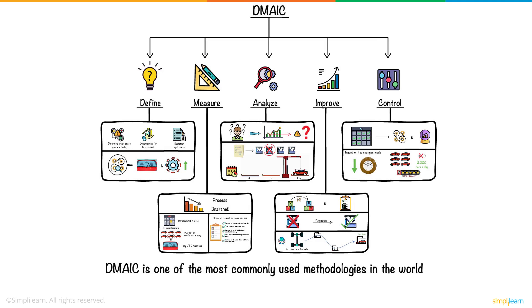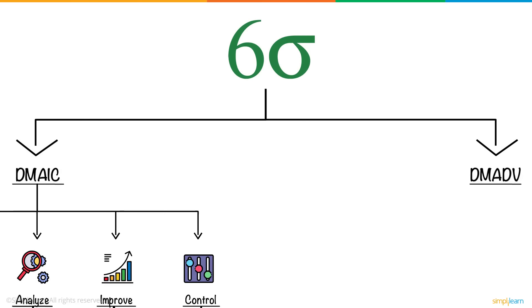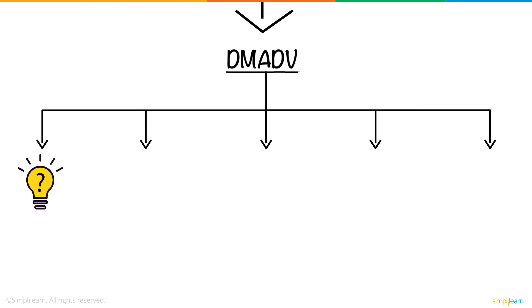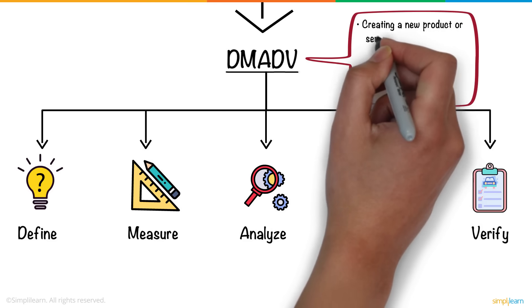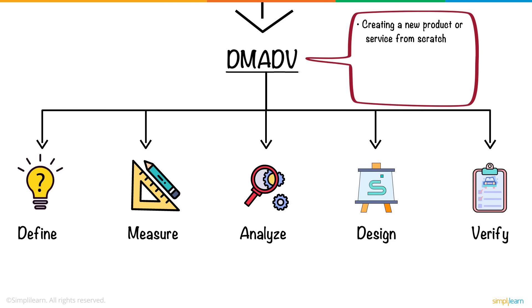It focuses on improving the existing products of the organization. The second methodology is DMADV, which is short for Define, Measure, Analyze, Design, and Verify. It is used when the company has to create a new product or service from scratch. It is also called DFSS, or Design for Six Sigma.